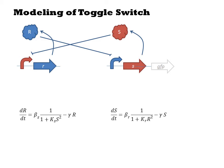Since the two inverters are arranged symmetrically, the equation for S looks about the same, just switching the letters R and S.